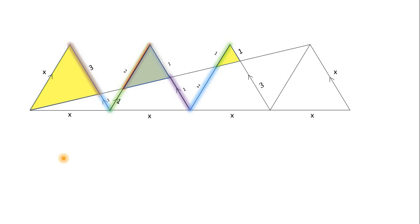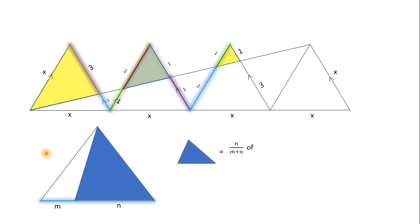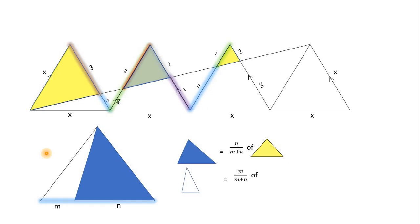We now use the area-and-ratio-of-triangle theorem. If a triangle is given and a line cuts one side in the ratio m:n, then the area of the blue shaded region is n/(m+n) of the whole triangle, and similarly the other part is m/(m+n) of the whole triangle.